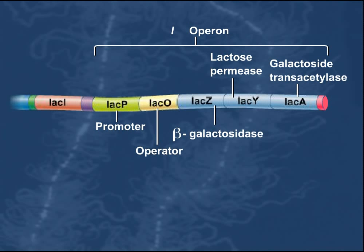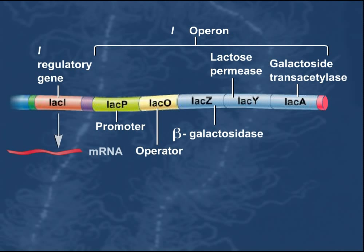Located near, but not in tandem with, the LAC region is the LAC-I regulatory gene that codes for an mRNA that is translated to produce a protein referred to as the LAC-Repressor.